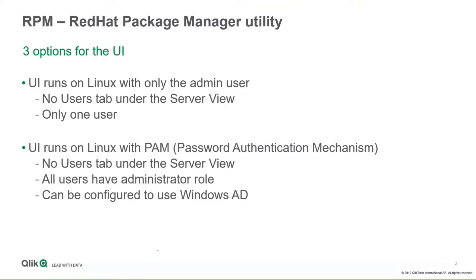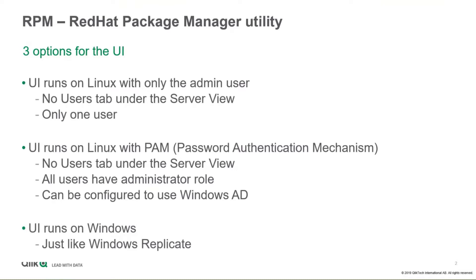Beyond this, PAM can be configured to use Windows Active Directory, which puts you in between the Linux and Windows world — you have all your Windows users in Active Directory with access, but they're all administrators. With the third option, you can install Replicate on Windows and have it point to the Linux server. In that case the UI runs on Windows and behaves just like Windows Replicate, but users can still connect directly to the Linux UI through PAM, and they would be administrators.